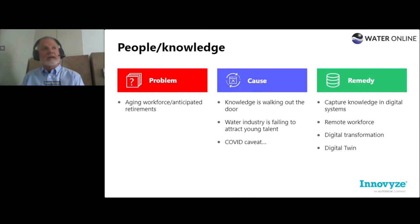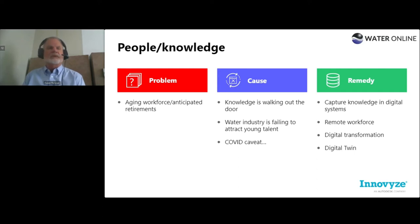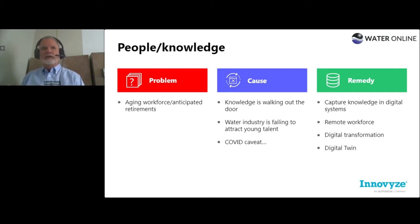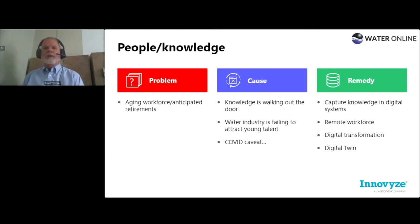Some remedies for the traditional people-and-knowledge problem include capturing that knowledge in digital systems — talking to folks who know projects never recorded in your GIS and making sure those things are captured, or adding information into your work order system about why things may have failed. This really is the whole concept of digital transformation. COVID thrust all of us into the heart of digital transformation, and utilities responded very efficiently — getting laptops to people at home and supporting remote workforces. There was great success in digital transformation for administrative challenges.